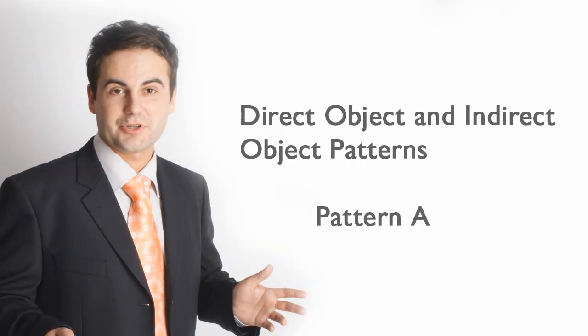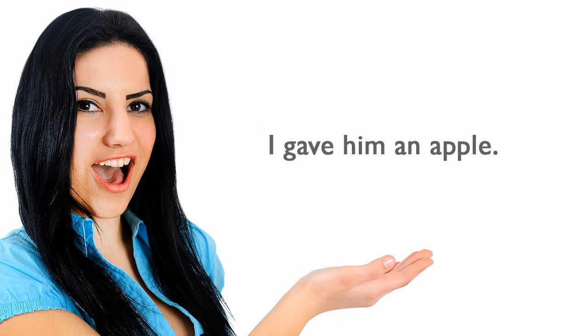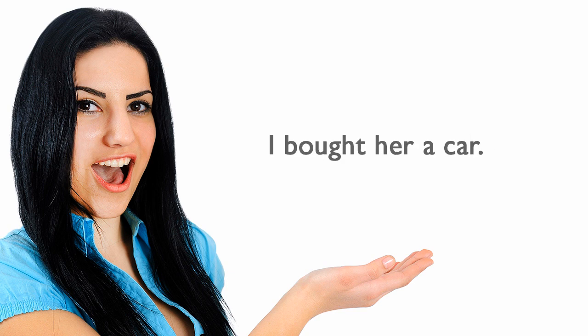Direct object and indirect object patterns. Pattern A: I gave him an apple. I bought her a car. I asked him a question.